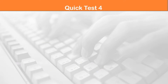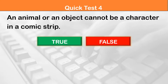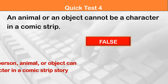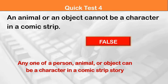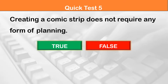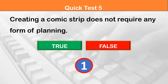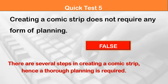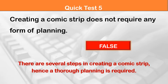Question 4: An animal or an object cannot be a character in a comic strip — true or false. This statement is false. Anyone — a person, animal, or object — can be a character in a comic strip story. Last question: Creating a comic strip does not require any form of planning — true or false. There are several steps in creating a comic strip, hence a thorough planning is required. The statement is therefore false.